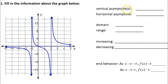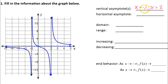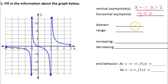Let's talk about the vertical asymptotes. We have one at negative one and another one at positive two, so we call them x equals negative one and x equals two. Don't just say negative one or two — say x equals negative one and x equals two. There's also a horizontal asymptote on the x-axis; that is the line y equals zero.